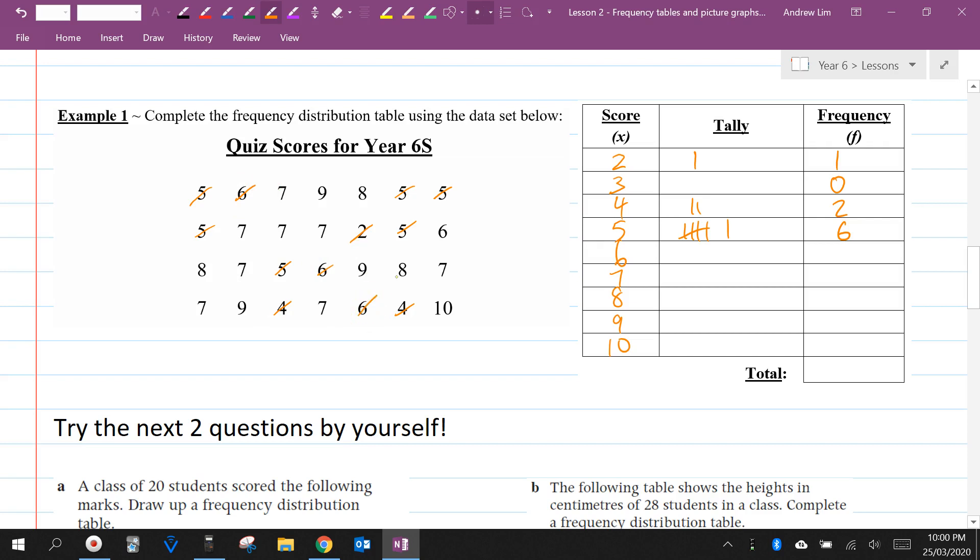How many sixes are there? Four. How many sevens? Eight. How many eights? Three. How many nines? Three. And there's only one ten.